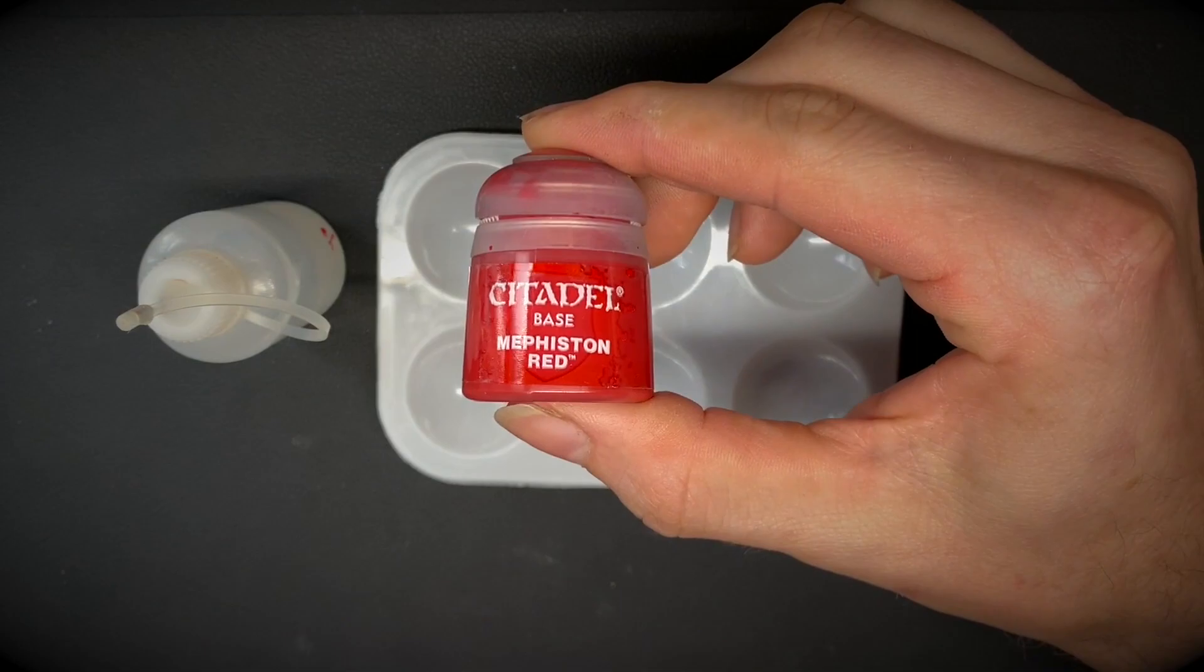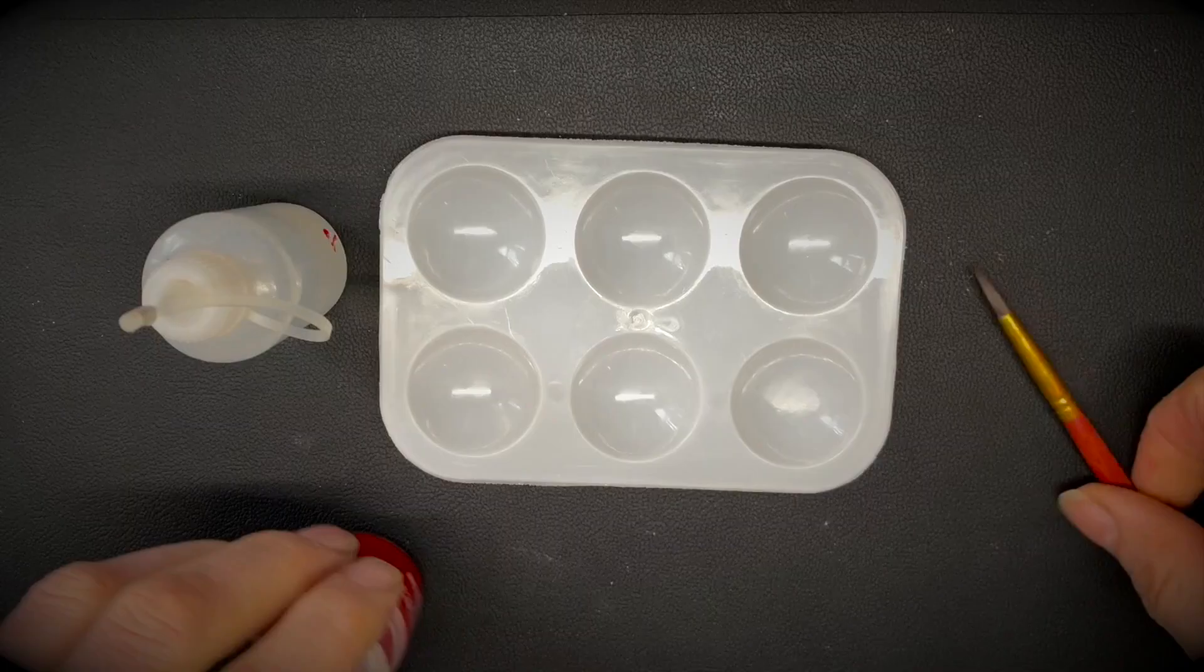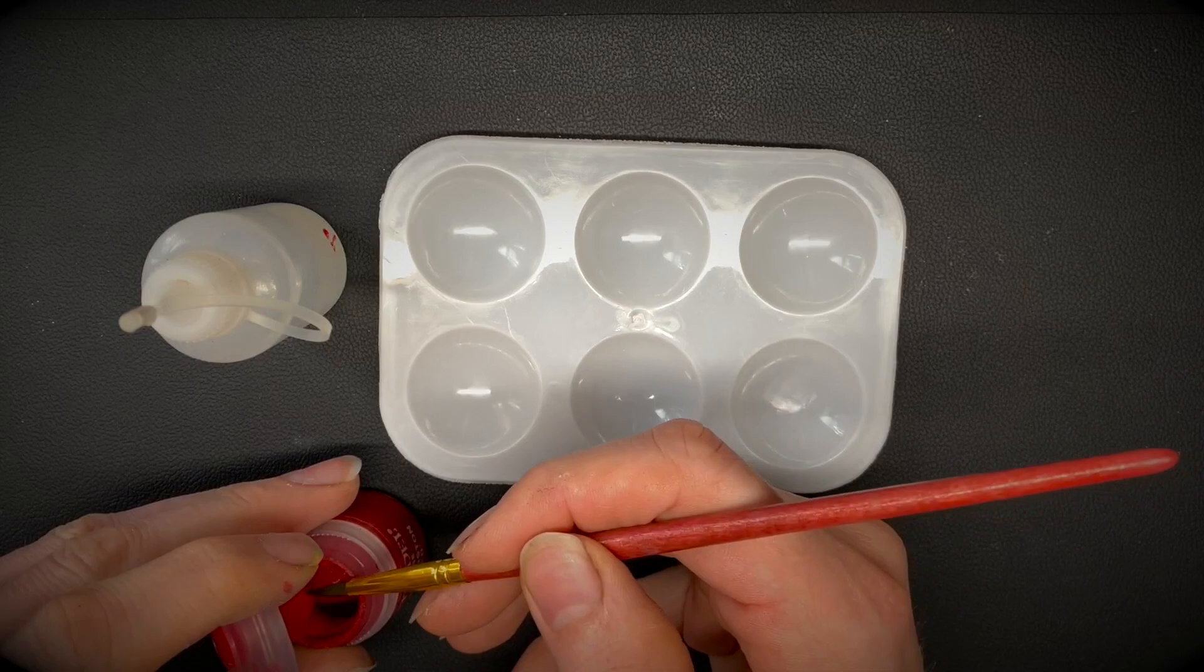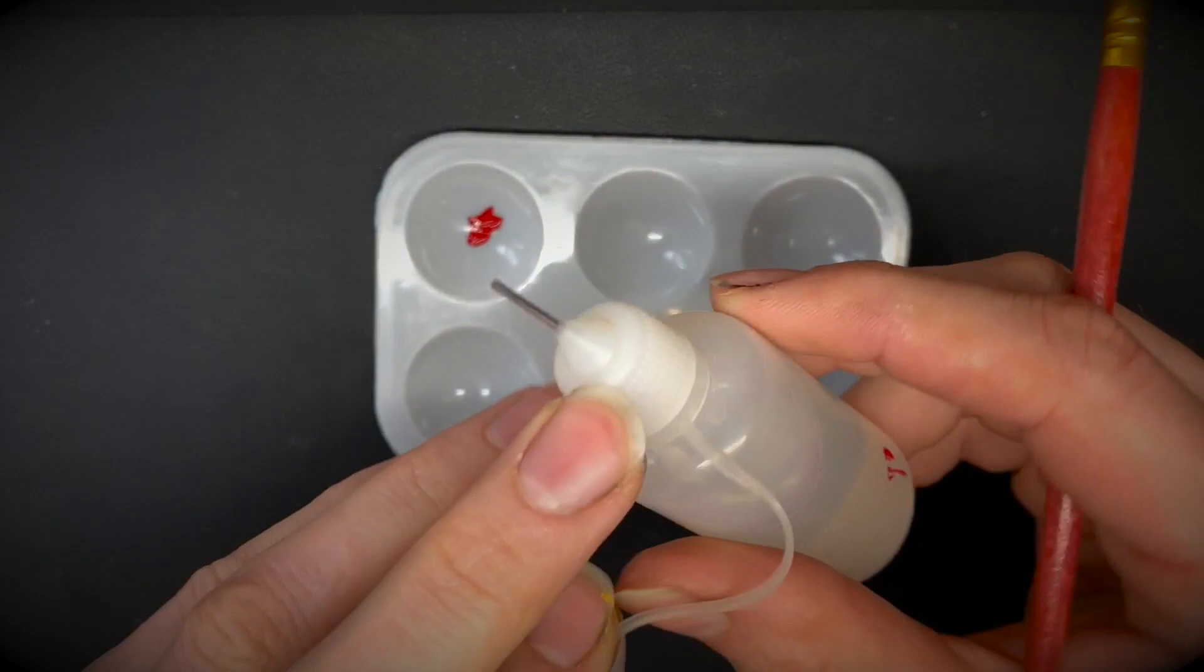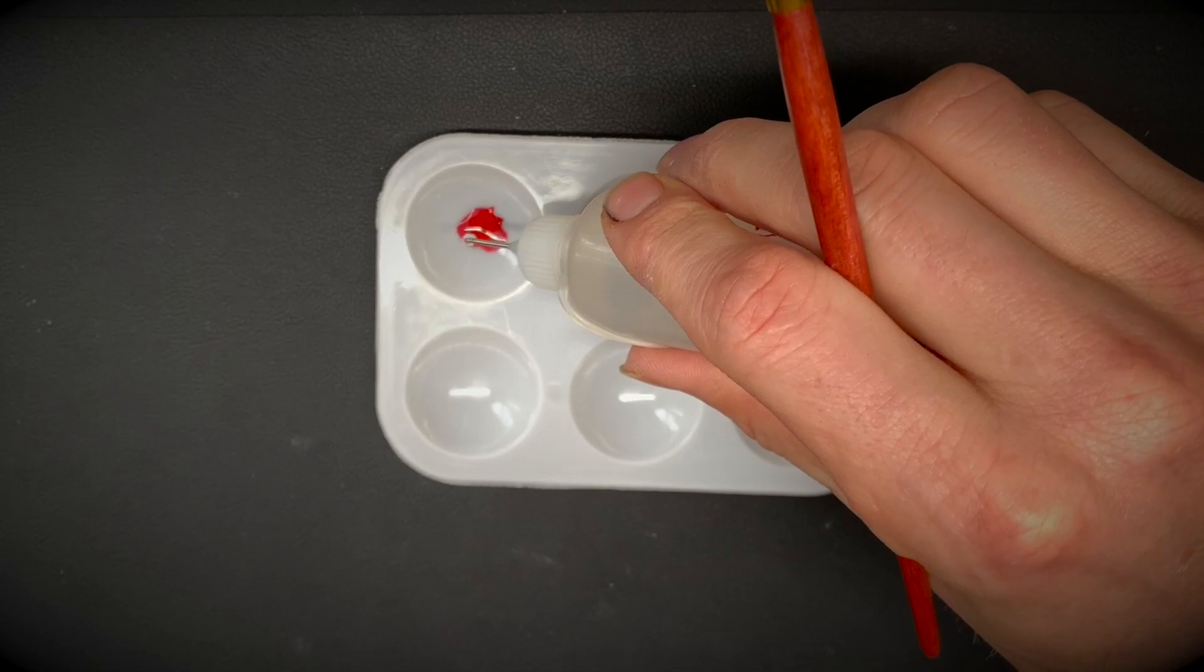We'll be starting off with Citadel's paint range, Mephiston Red. Crack it open, get you a nice little dollop, place it in the palette, and onto your water - going to add roughly 7 to 10 drops. I use 10 drops here.